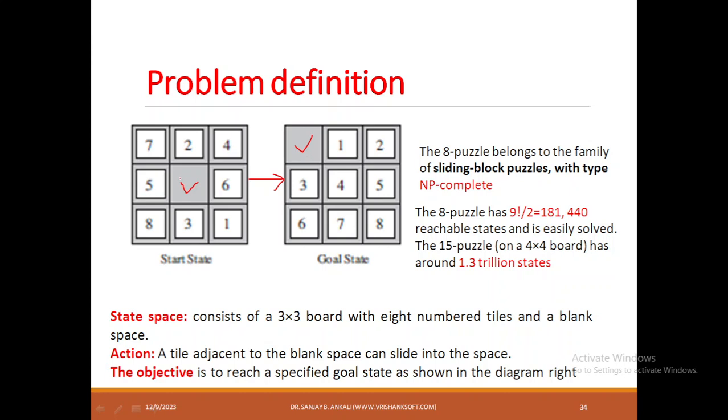To reach the goal, you move the empty tile left, right, up, or down. Moving left switches 5 with the empty tile, moving up switches 2, moving down swaps 3, and moving right swaps 6. We perform these actions to ensure we reach the goal state. This is an NP-complete problem.